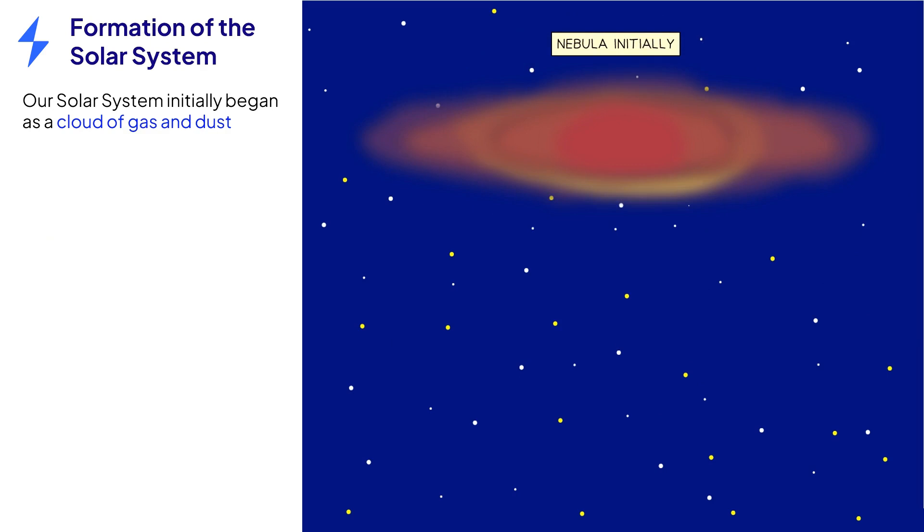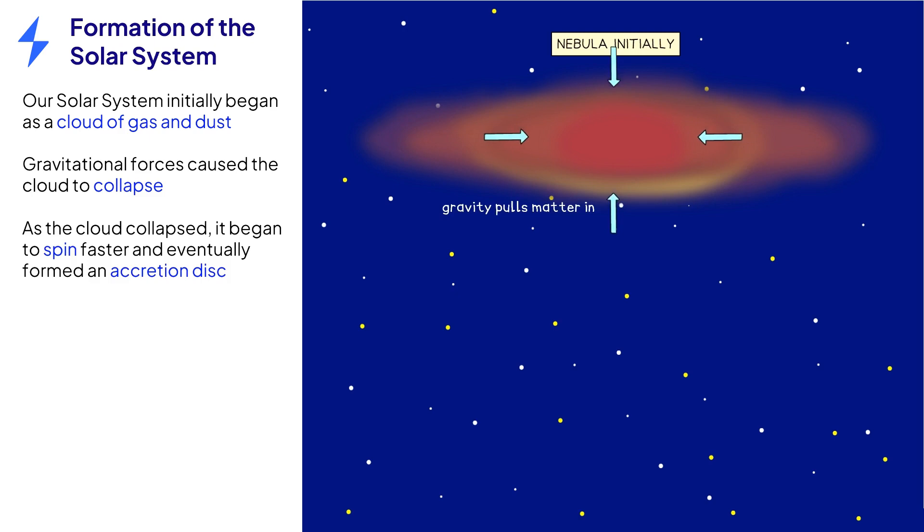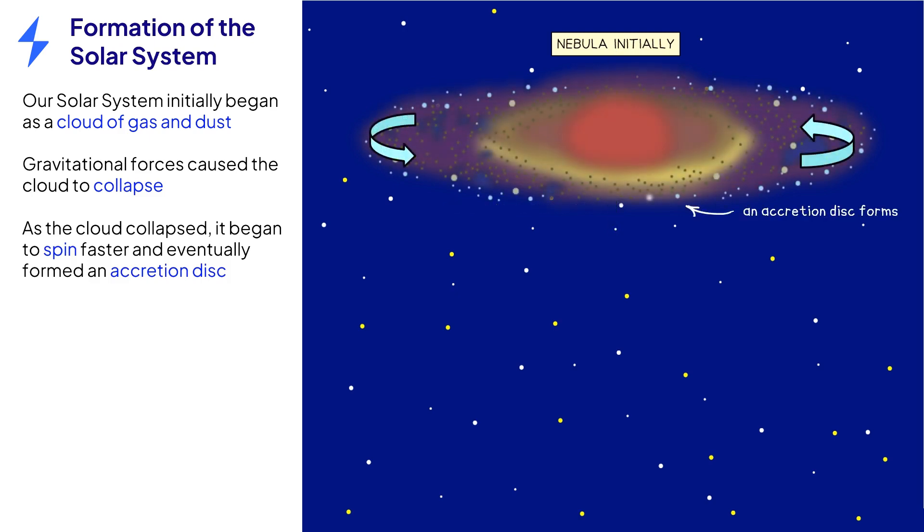Our solar system formed from the dust and gas ejected by a supernova. As particles began to clump together, gravitational forces became stronger and pulled the matter inwards. As the cloud collapsed, it spun faster and faster. All the spinning and collapsing led to the formation of a thin, rotating accretion disk.